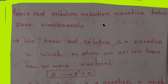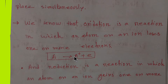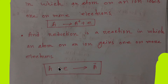Without oxidation, there is no existence of reduction. We know that oxidation is a reaction in which an atom or an ion loses electrons. After losing electrons, the oxidation state of the atom or ion will increase. On the other hand, reduction is a reaction in which an atom or ion will accept or gain one or more electrons.